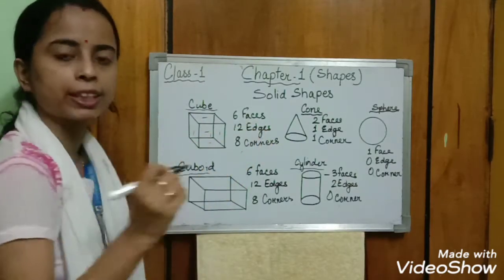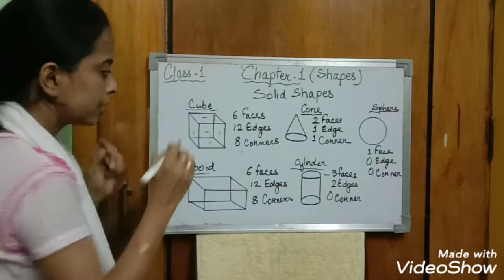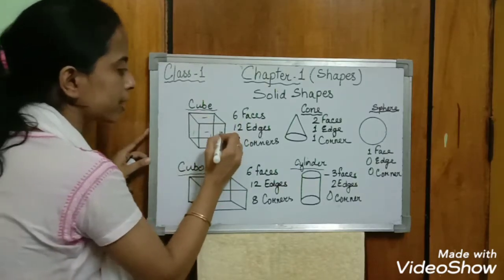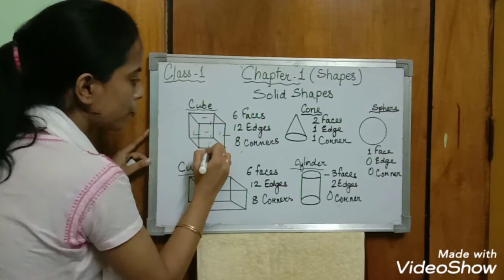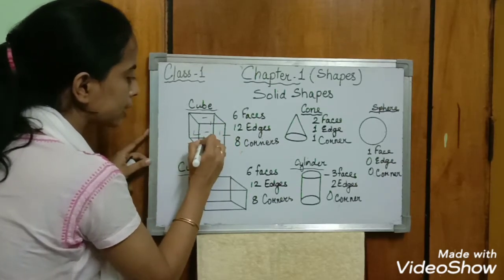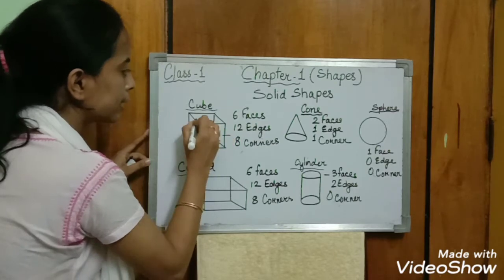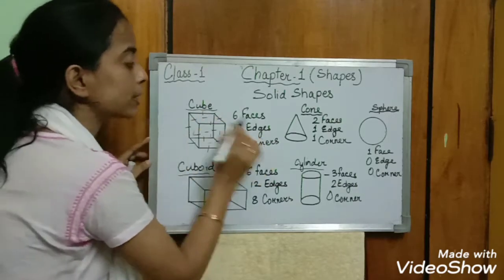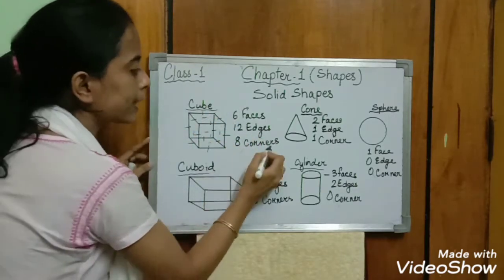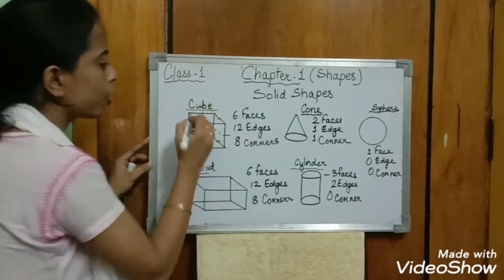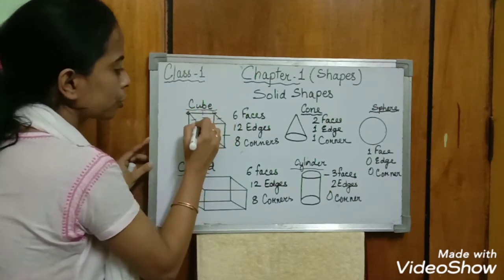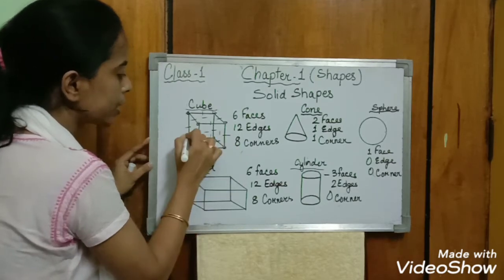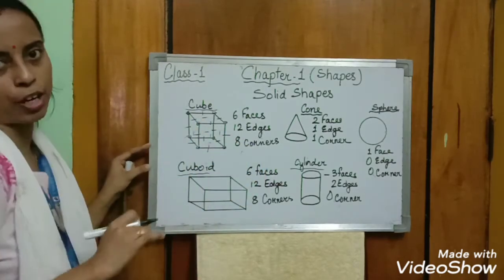How many edges does a cube have? A cube has 12 edges. The cube is made of straight lines — counting them: one, two, three, four, five, six, seven, eight, nine, ten, eleven, twelve. So 12 edges. And cube has eight corners — counting: one, two, three, four, five, six, seven, eight. So cube has eight corners.